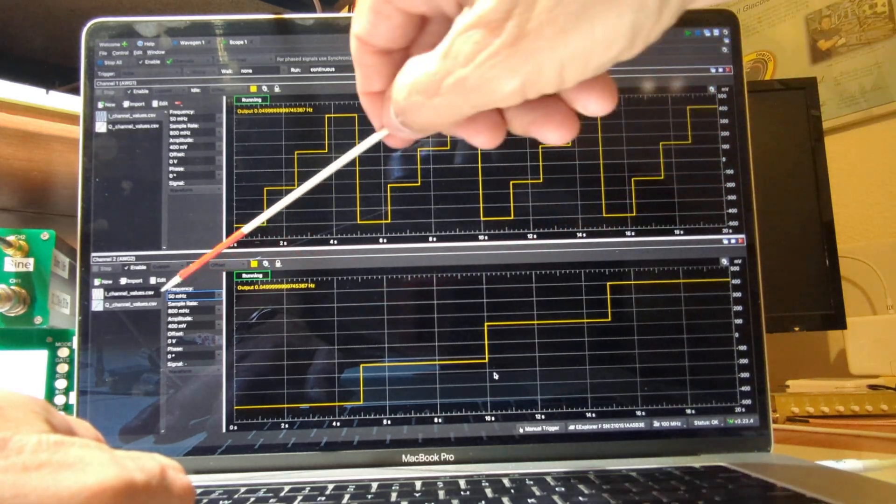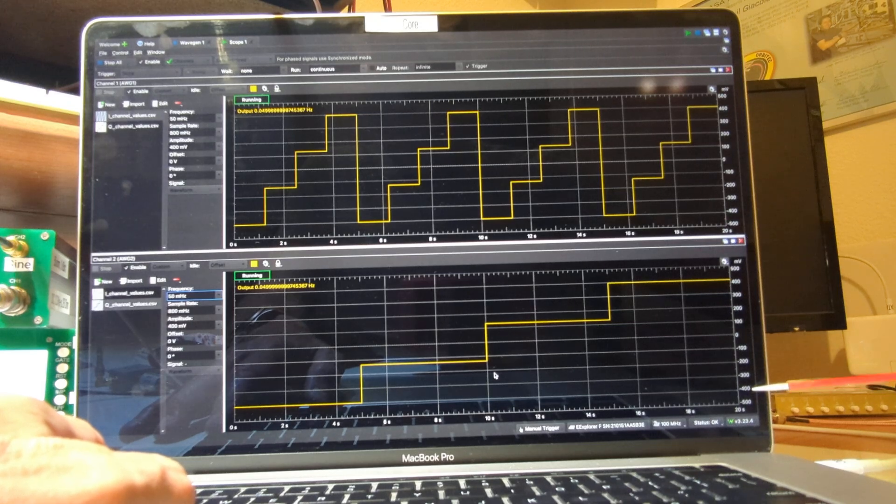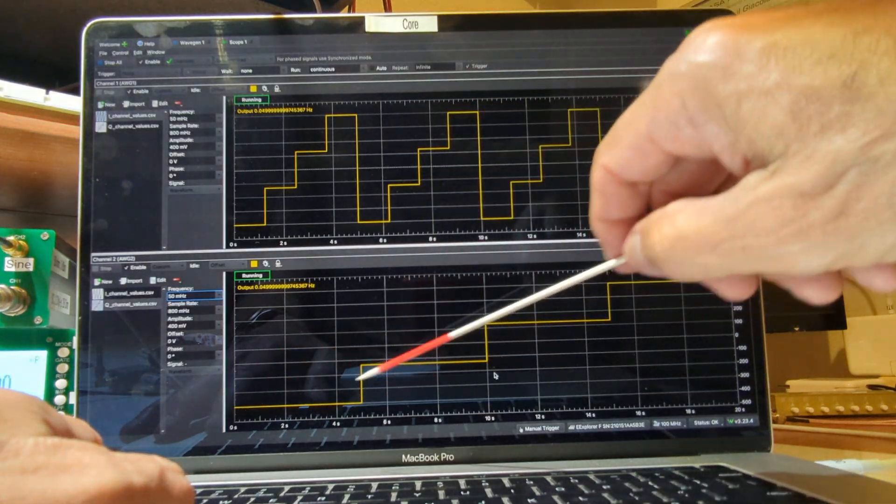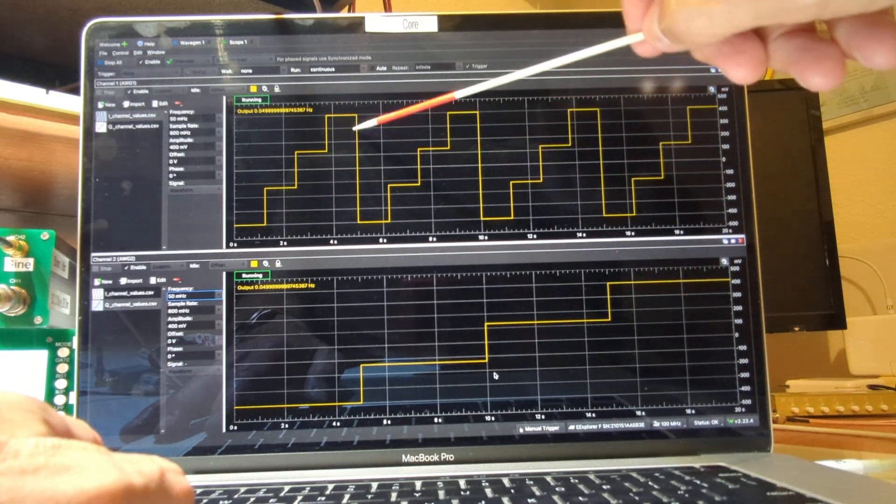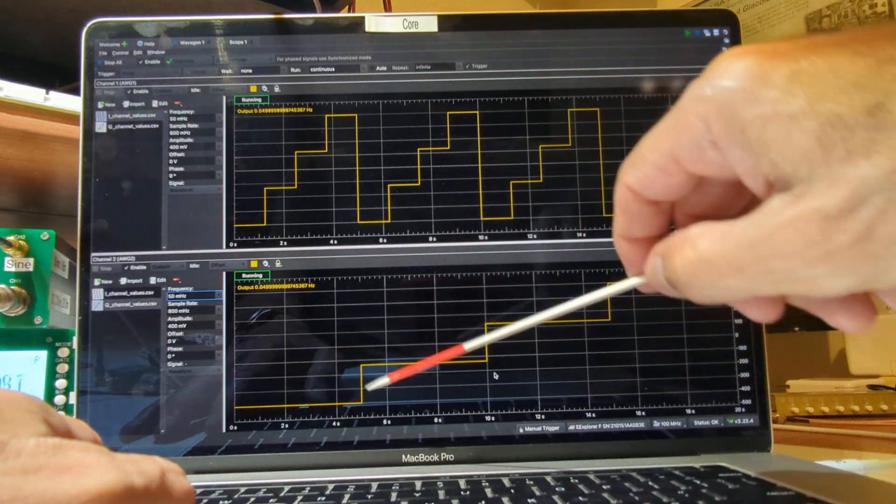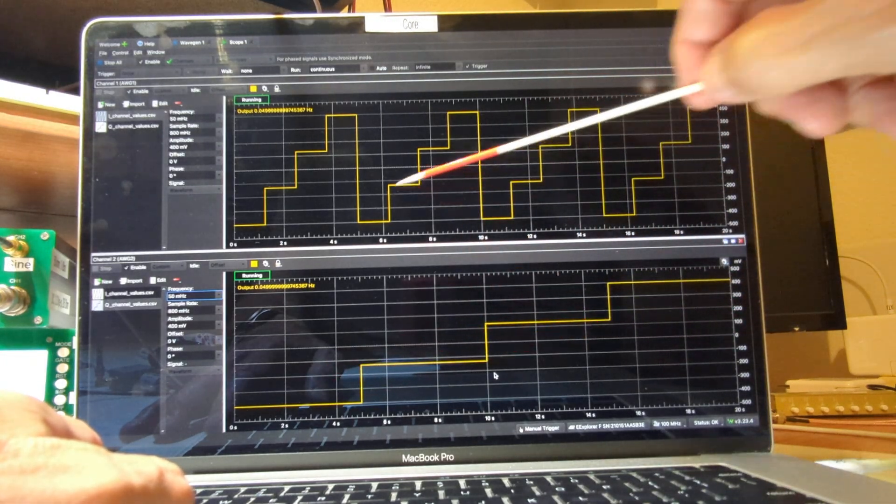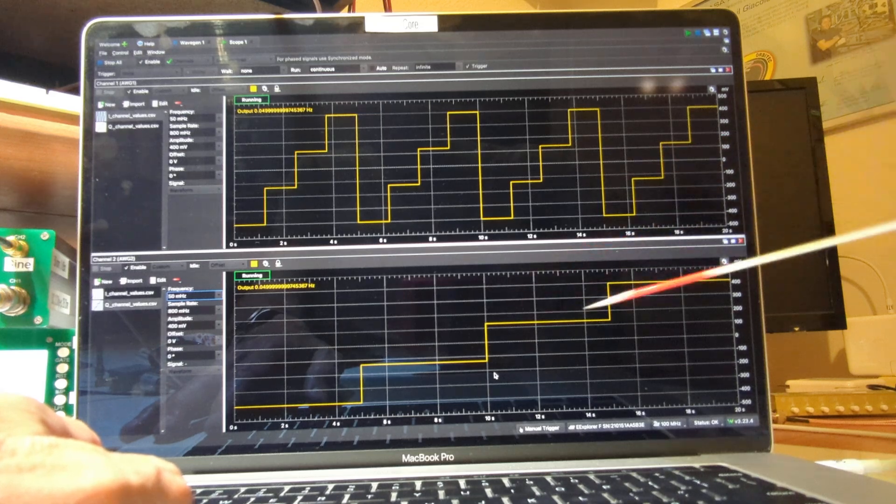And then I have another channel, which is also in four steps, also going from minus 400 millivolts to positive 400 millivolts, but doing it at a slower pace so that we go through all the quadrature phase changes or amplitude changes, and then step up and do the same thing on the in-phase as we just step through that, we repeat it.